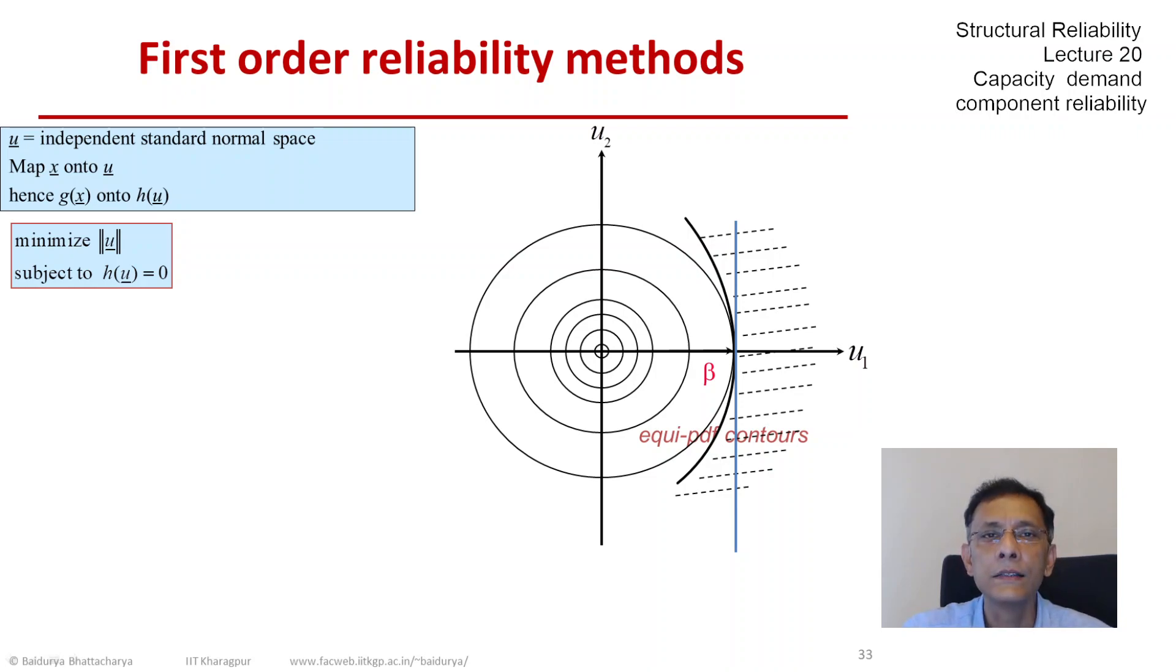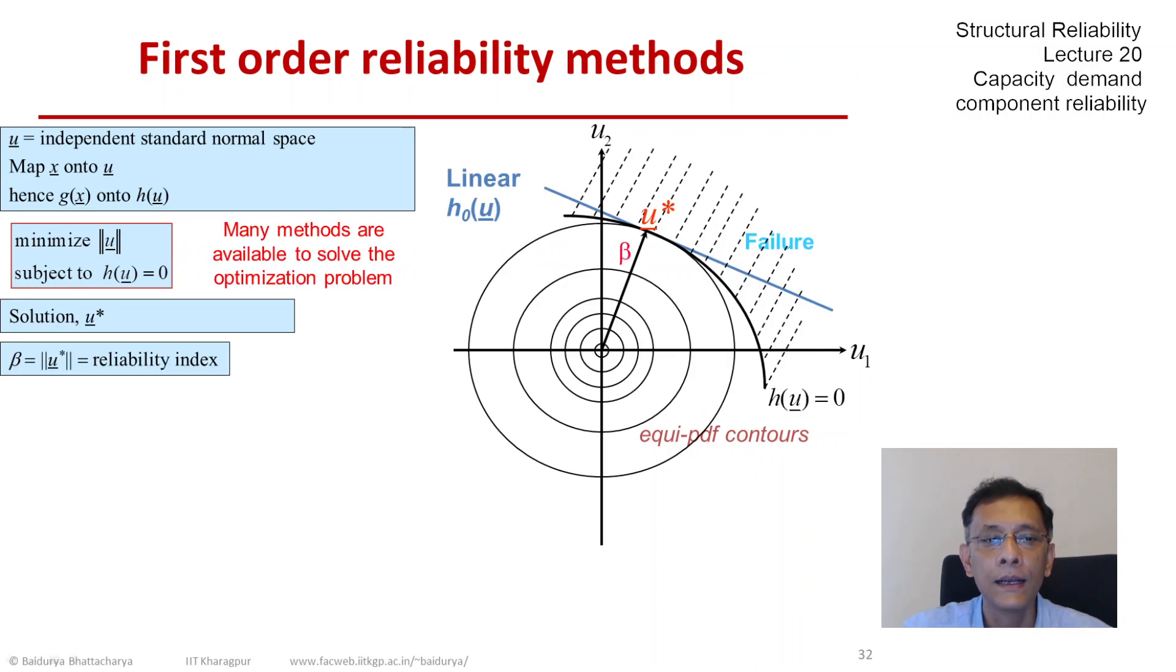Obviously this is an approximation. It is the probability corresponding to that linearized blue line. It's h_0 that gives the modified failure region and that has an exact failure probability given by beta.